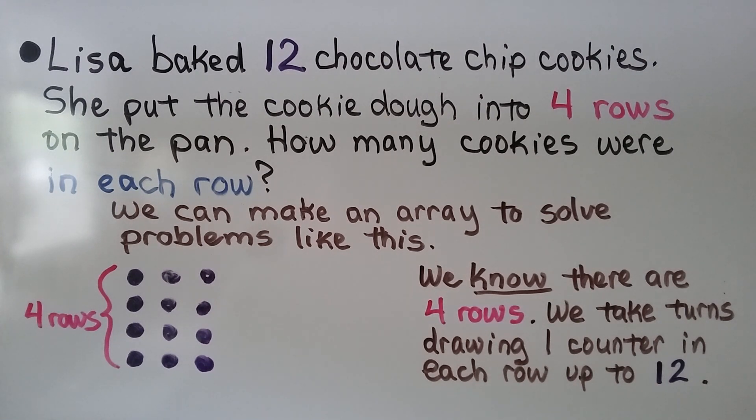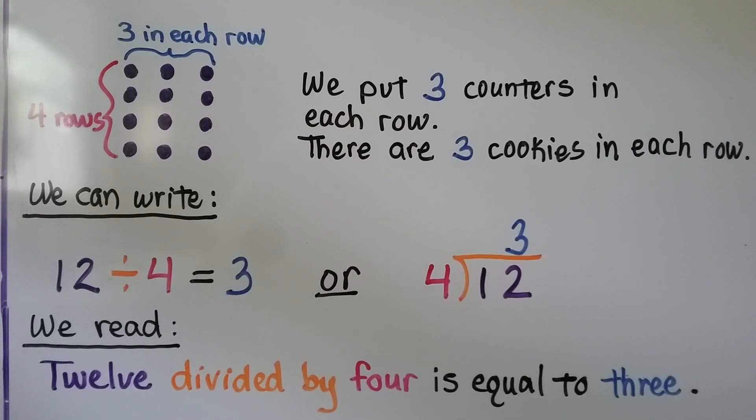We've got 3 in each row. We put 3 counters in each row so there are 3 cookies in each row. We can write it as a number sentence or with a division bracket. Either way we read: 12 divided by 4 is equal to 3.